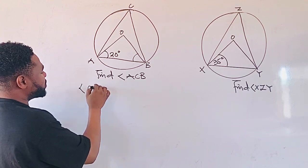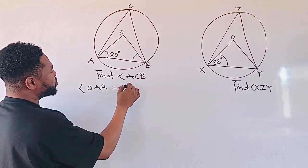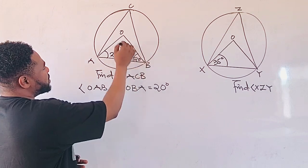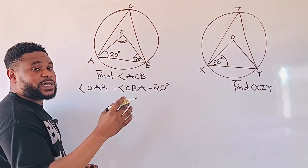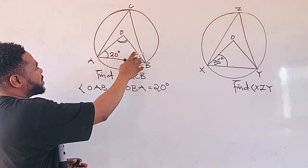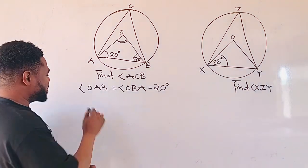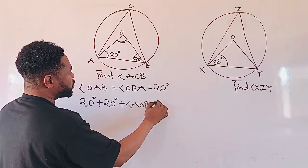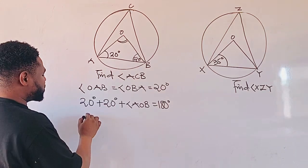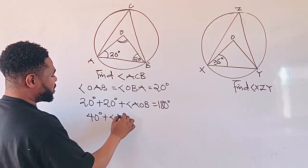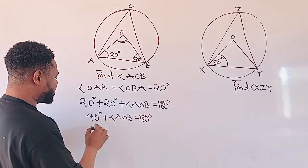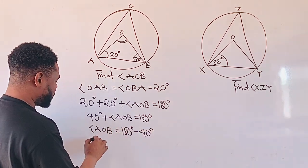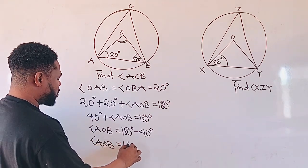Therefore, we can say that angle OAB should be equal to angle OBA, equal to 20 degrees. So if the angle here is 20, we can find the angle at the center using the property that when we sum all the interior angles in the triangle, it must be equal to 180 degrees. Therefore, we can say 20 plus 20 plus angle AOB should be equal to 180. So 40 plus angle AOB equals 180, and angle AOB will be equal to 180 minus 40, which gives angle AOB equal to 140 degrees.